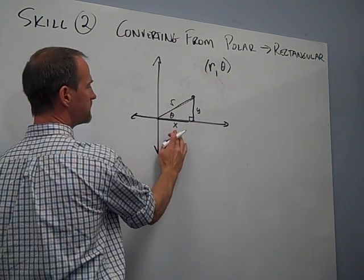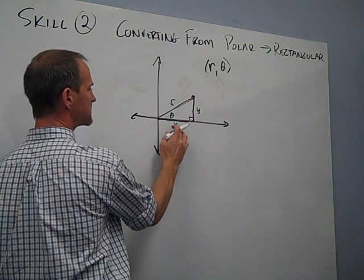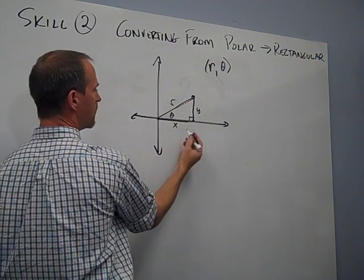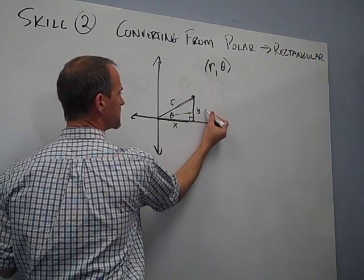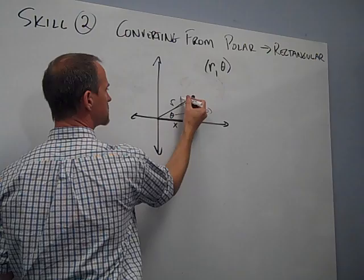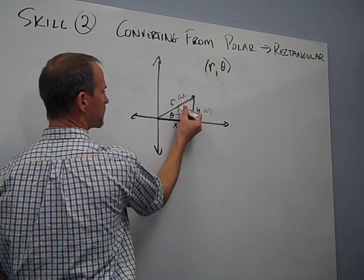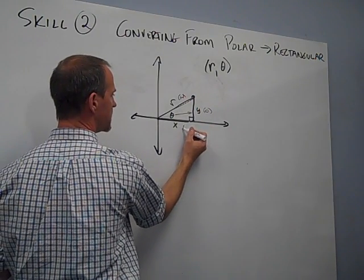So I want to get x. I want to find out what x is based on theta and r. Well, if this is our given angle, this is the opposite side, this is the hypotenuse. It's directly across from the right angle, and then this is our adjacent side.